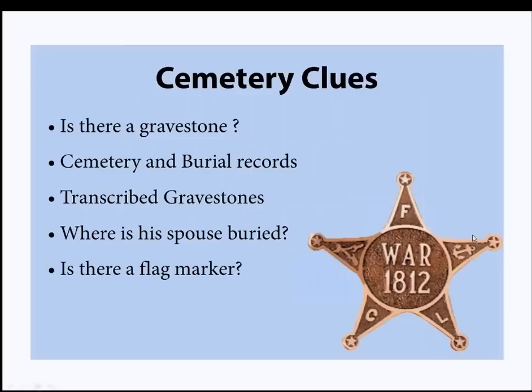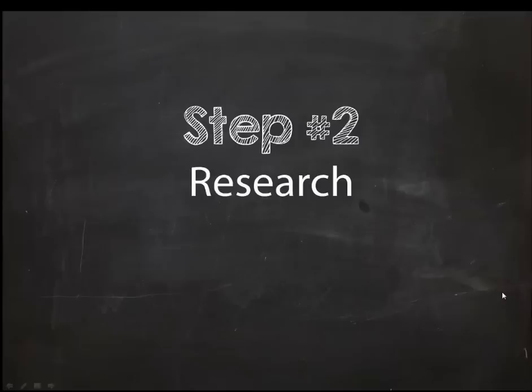Cemetery clues might be what first leads you to know you have a War of 1812 ancestor — 200 years is a long time for a story to pass down, so the oral tradition may not convey that information. By the 19th century, gravestones were available and could be applied for by family members. Look for cemetery and burial records; older 19th century cemeteries in small churchyards may not have exact lots, but the garden cemetery movement of the 1830s brought strategized plots where you could find exactly where a burial is even without a stone. And is there a flag marker? Be careful — lawn mowers can knock them down, and I've seen flag markers for War of 1812 veterans placed on children born 50 years later.